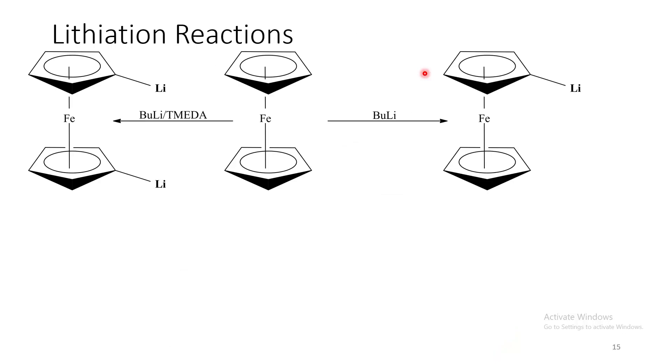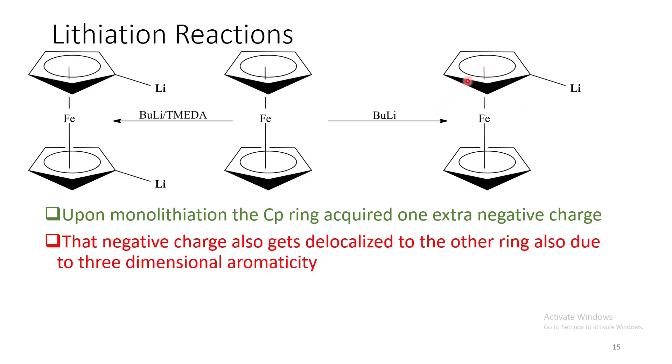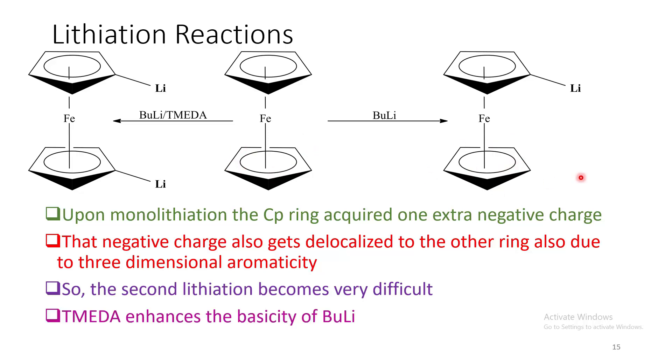Lithiation reactions. With only butyllithium, it gives a mono-lithiated product. Whereas in presence of TMEDA, it gives di-lithiation. Now why is it so? Because upon mono-lithiation, this particular ring becomes much more electron-rich. Now due to three-dimensional aromaticity, this charge is now transferred somewhat to this ring also. So this ring becomes much more negative charge compared to this original neutral analog. So the second lithiation becomes difficult. But now TMEDA enhances the reactivity of butyllithium that enables the second lithiation.